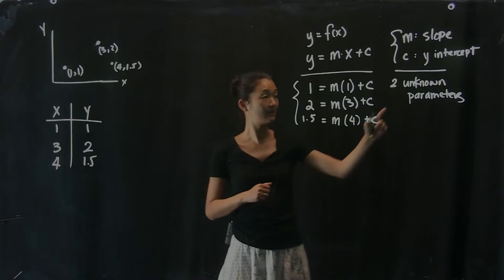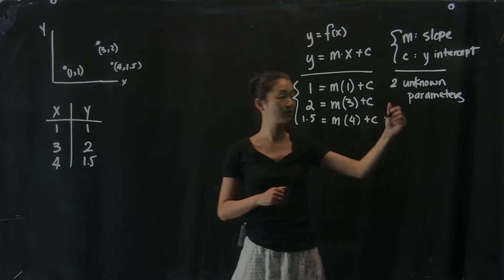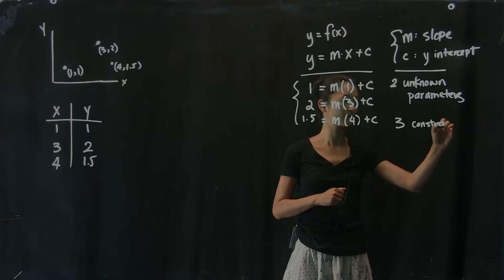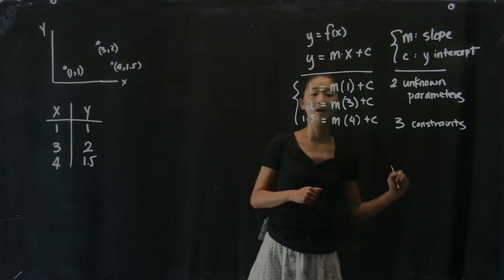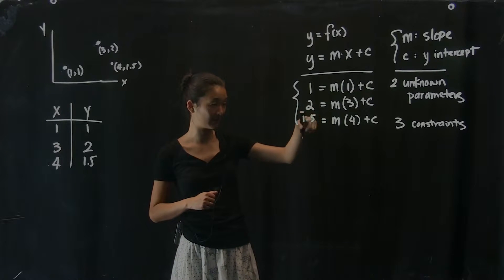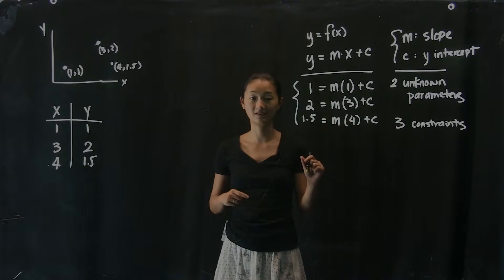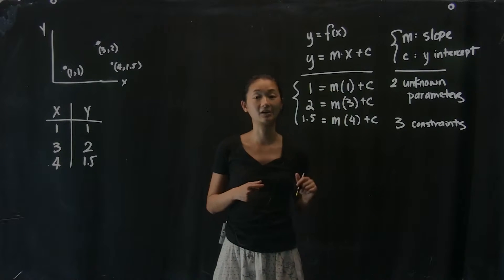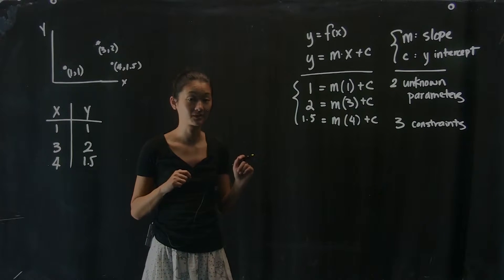So now we have this system of equations. And importantly, even though it still has two unknowns, we now have an extra constraint. So three constraints. And we can make sure by double-checking, by multiplying and comparing these numbers, that this is indeed three actual constraints. One of them is not a linear combination of any others. So that's important.